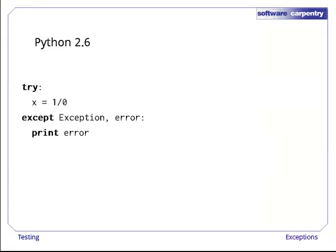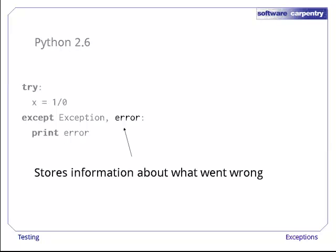In Python version 2.6 and earlier, we do this by putting a variable name after the name of the exception type, separating the two with a comma. If something goes wrong in the try, Python will create an exception object, fill it with information, and assign it to the variable error. There's nothing special about the variable name. We can use anything we want.